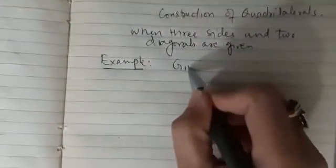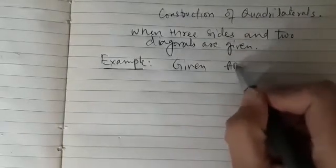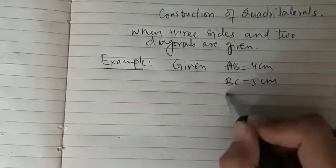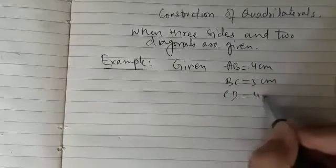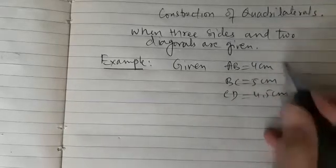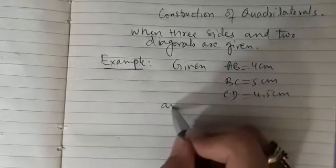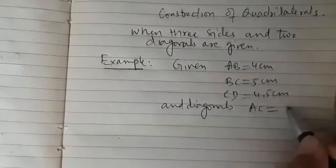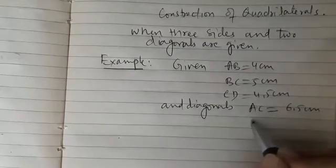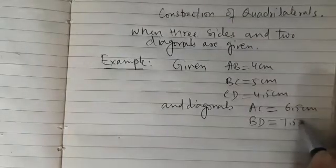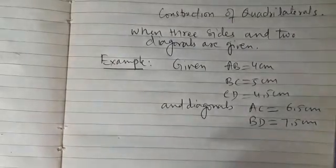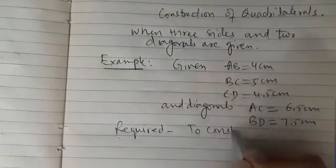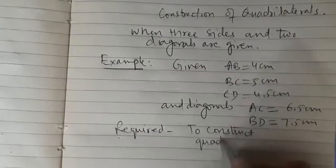It is given that AB is 4 cm, BC is 5 cm, CD is 4.5 cm. These are the three sides of the quadrilateral and diagonals AC is 6.5 cm and BD is 7.5 cm. So this is what is given and required is to construct quadrilateral ABCD.